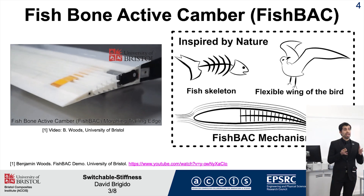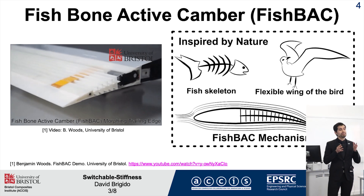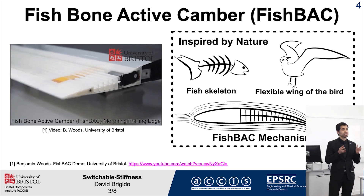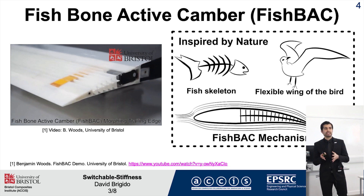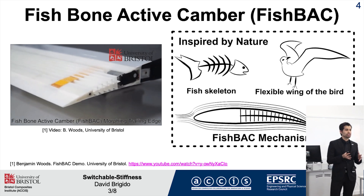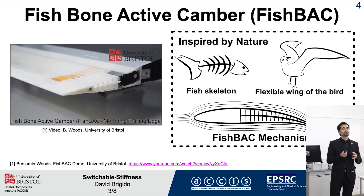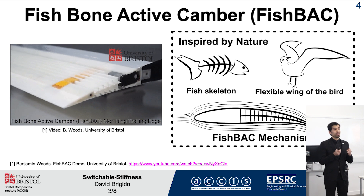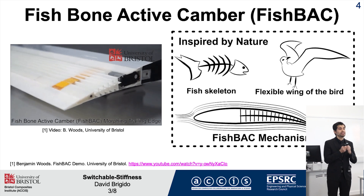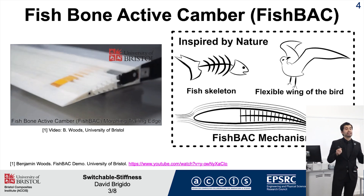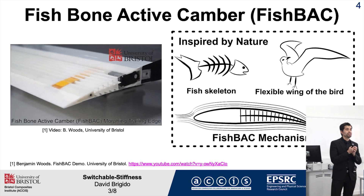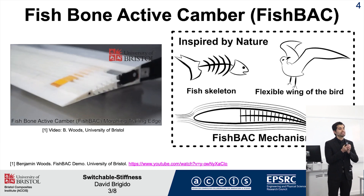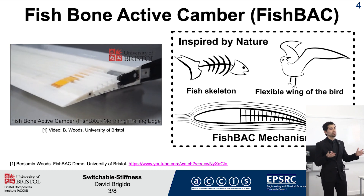However, avian wings have the ability to switch stiffness. For example, when they require to sustain aerodynamic loads, the wing has to be strong and stiff, so they contract their muscles. For other flying conditions, when they require to be soft and elastic, they relax their muscles.